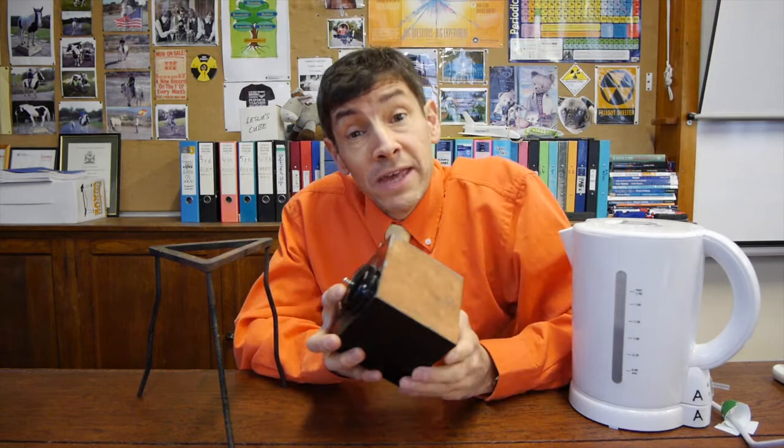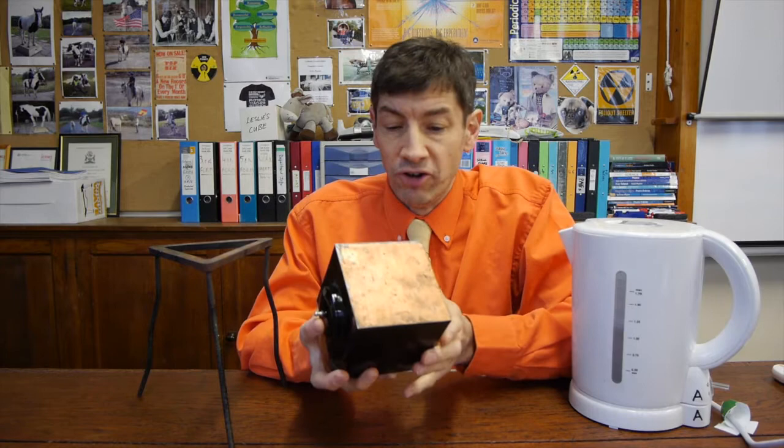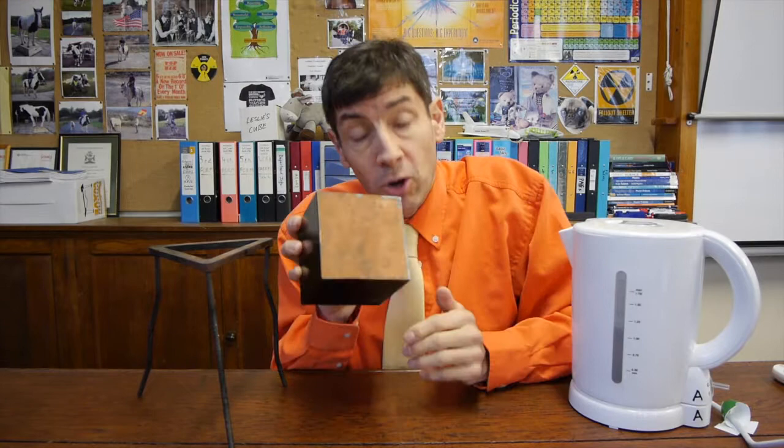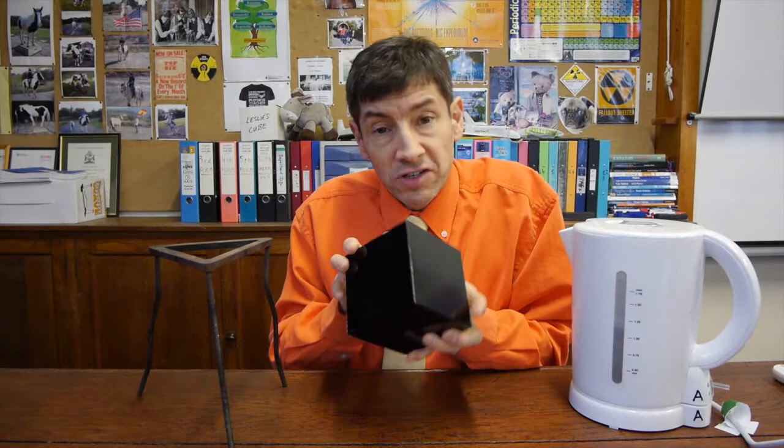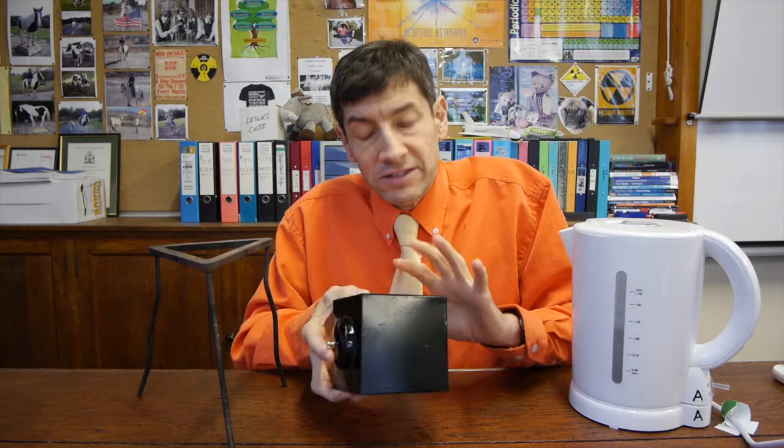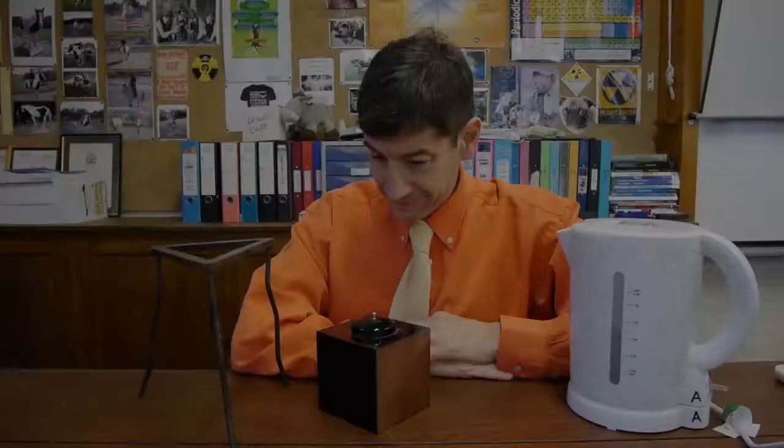So here's a Leslie's Cube. It was invented by John Leslie, a physicist from Scotland in about 1800 and what he made was a hollow metal box. So what we've got here is a copper box. It's important you know that this side is a sort of polished copper and all the other sides are painted. And what we're going to do today is look at how well different surfaces emit heat from the cube.